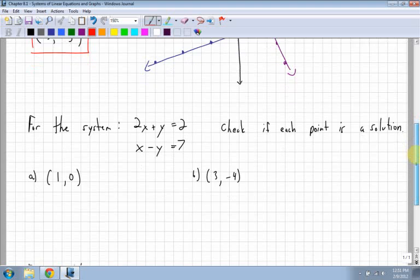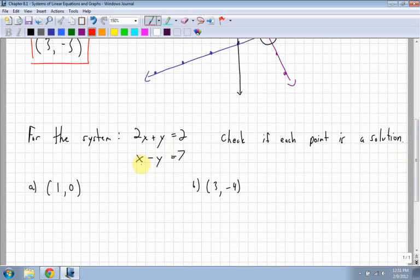Next question. For the system, 2x plus y equals 2, and x minus y equals 7. Check if each point is a solution. So in this case, what you have to do is you have to plug each point in for x and for y into both equations and see if they work out.